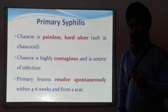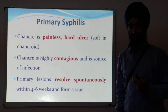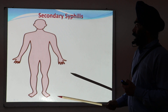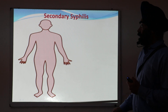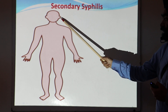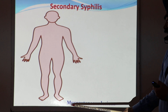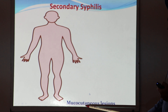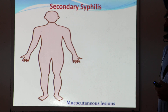The symptoms of primary syphilis will disappear and the person will think they have recovered, but that is not the case. After two months, another kind of symptoms appear — secondary syphilis. There is an appearance of mucocutaneous lesions, where 'muco' means mucus and 'cutaneous' means skin.